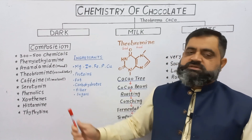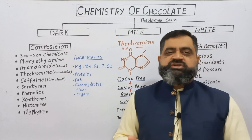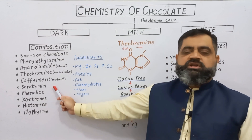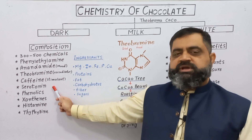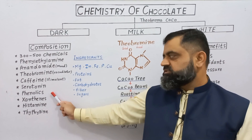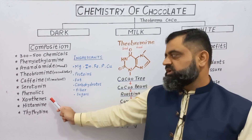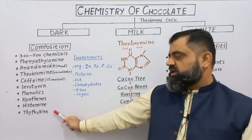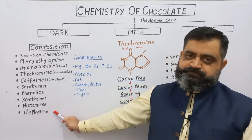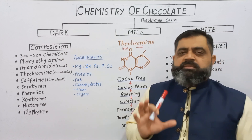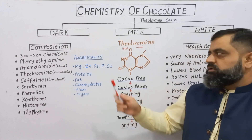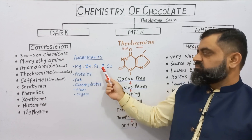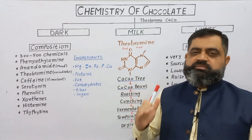Caffeine is also present in chocolate, just like in tea and coffee. Serotonin, which is also a neurotransmitter, is also present in certain amounts in chocolates. Other chemicals include phenolics. The main minerals in the cocoa powder are magnesium, zinc, iron, phosphorus, and copper — very important minerals in chocolates.